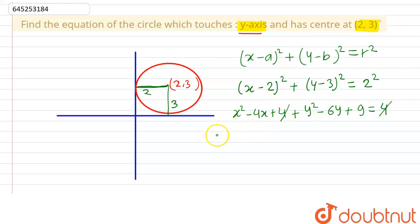So now we have the equation. Let's say this is our equation: x² + y² - 4x - 6y + 9 = 0. So this is our final answer.